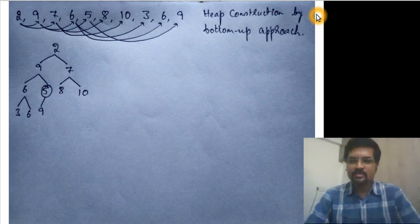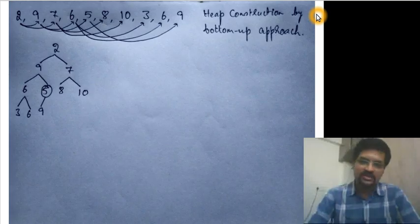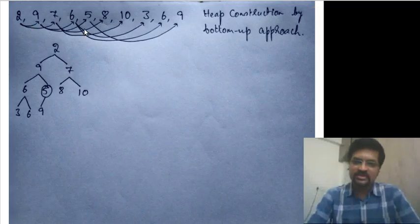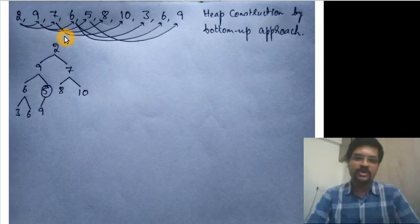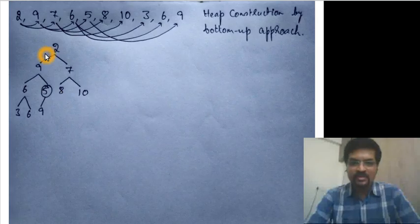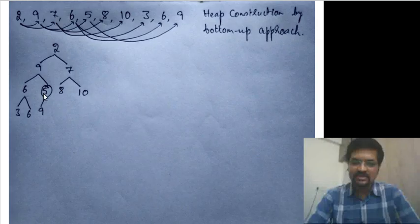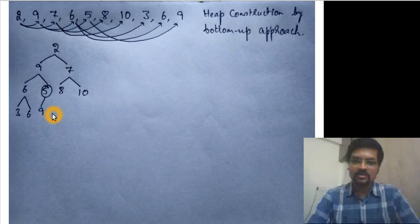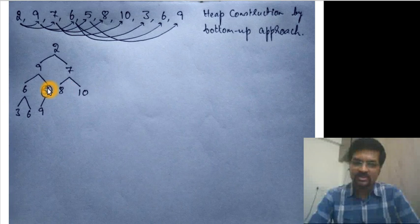In this video we are going to discuss the construction of a heap in a bottom-up manner. Here is an array of keys which needs to be converted into a heap. The array representation as a binary tree looks like this — it is just a binary tree at the moment and it is not a heap. To convert it, we start from the bottom of the tree and check whether the subtree starting from each node is a heap or not.